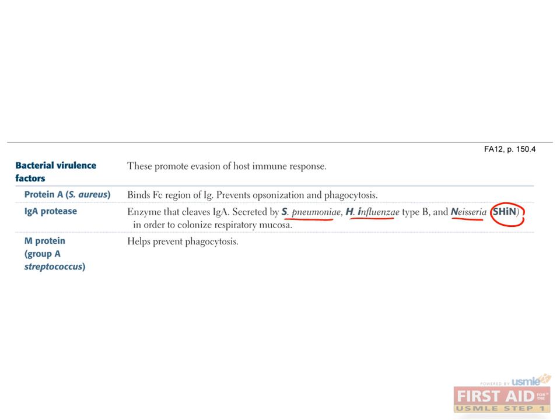M protein is strongly antiphagocytic. We will encounter the importance of M protein again when we talk about group A strep and rheumatic fever.